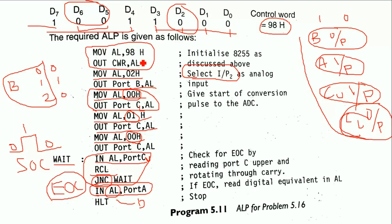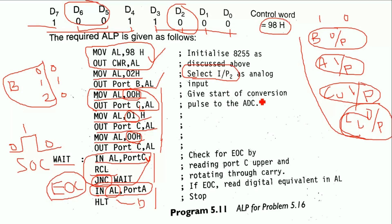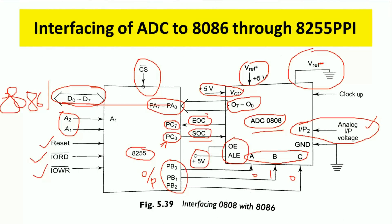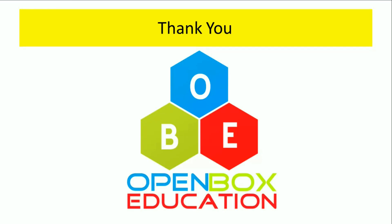In summary: first we set the mode of operation of 8255, then we select analog input 2, then send the SOC pulse, then wait for the EOC pulse, and finally read digital data from Port A. This is how the ADC 0808 is interfaced to the 8086 microprocessor through 8255. Thank you very much for watching this video. Please subscribe to my channel, Open Box Education.